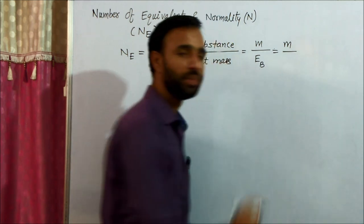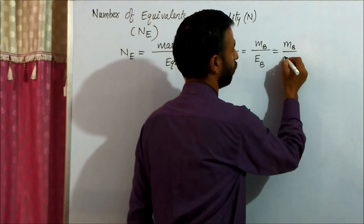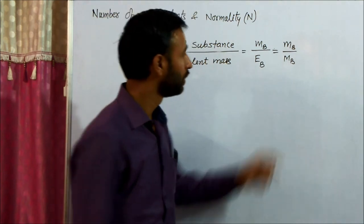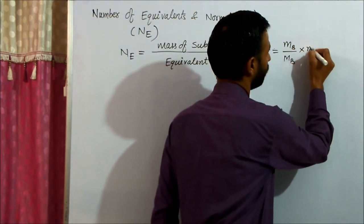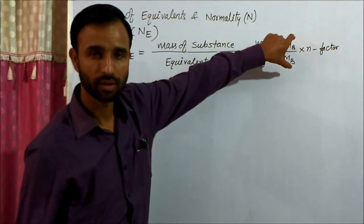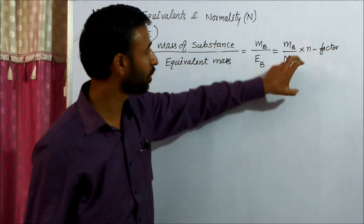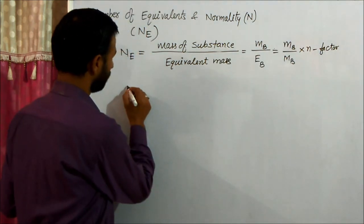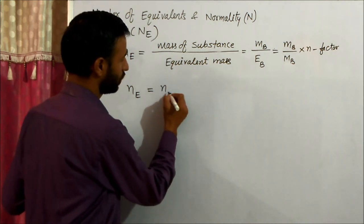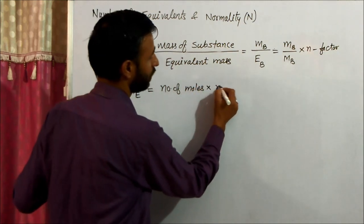Let us take substance B. The equivalent mass of substance B — with mass of substance B as MB — is molar mass of B divided by N factor, so it is multiplied into N factor. Mass over molar mass is number of moles. That means number of equivalents is equal to number of moles into N factor.